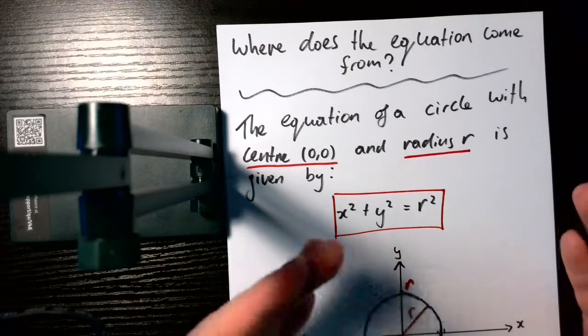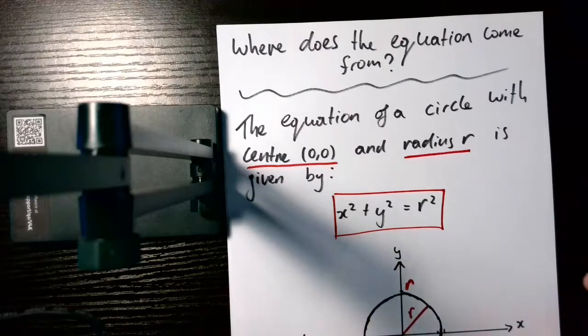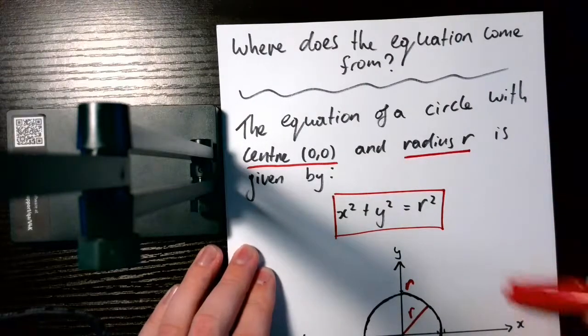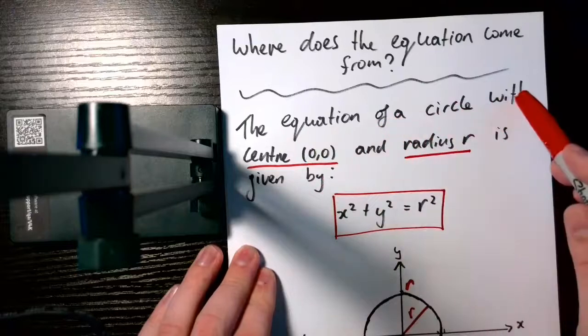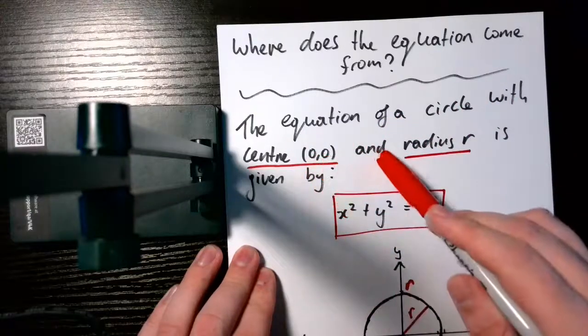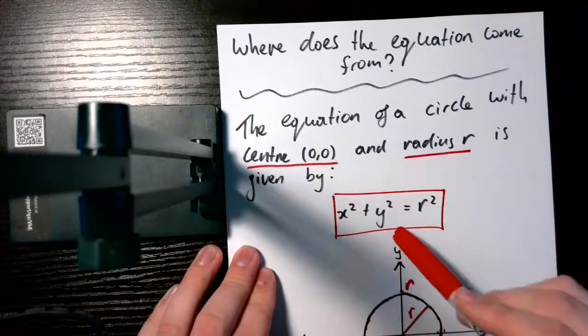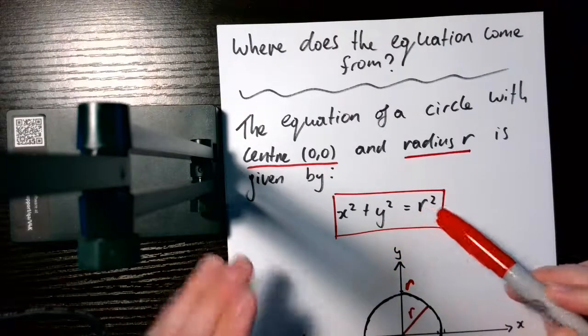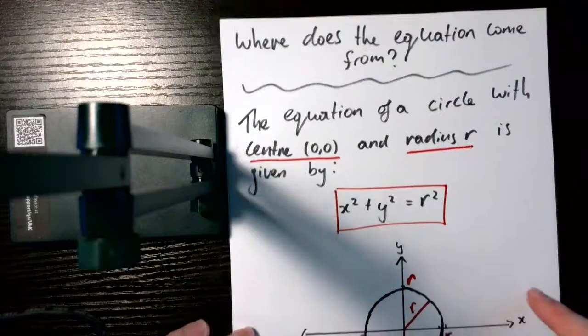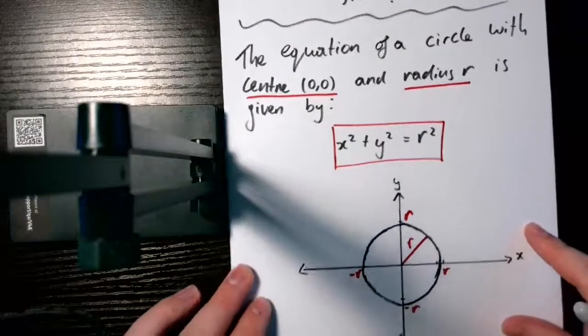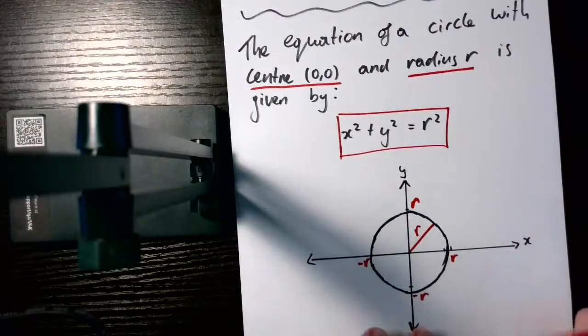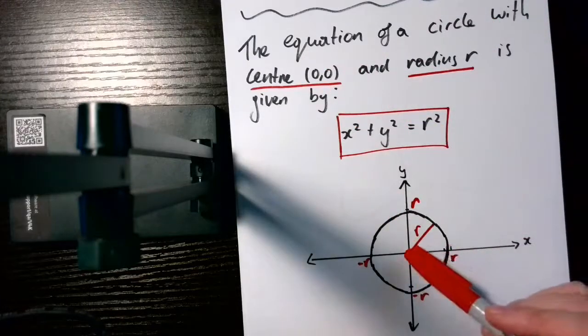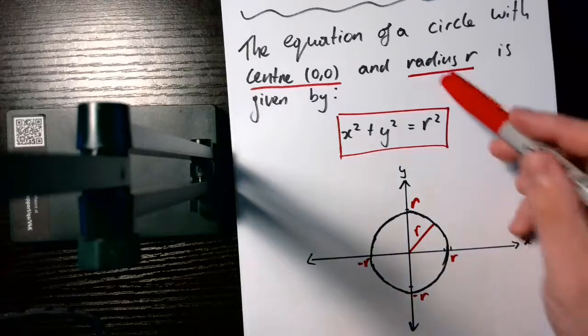So let's just actually talk about what the equation of a circle represents. And I have it here in this sentence. This sentence is really, really important. The equation of a circle with centre (0,0) and radius r is given by x squared plus y squared is equal to r squared. So let me just break this down for you just a little bit and it might help to actually understand this by looking at the diagram. The equation of a circle with centre (0,0).